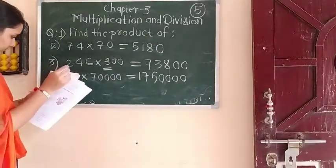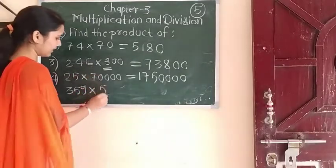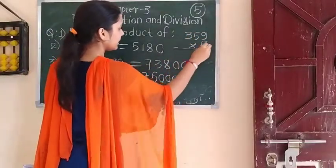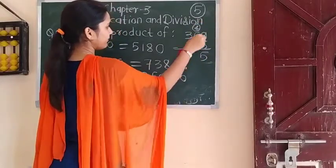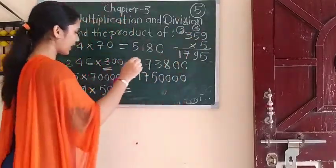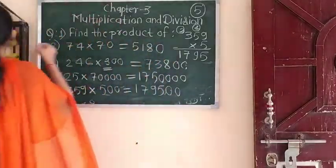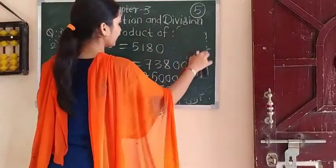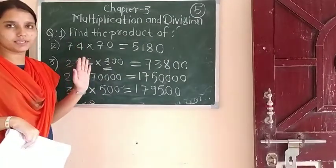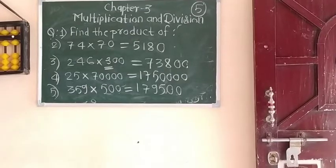Last example: 359 multiplied by 500. How will you solve this? First multiply 359 by 5: 5 nines are 45, 4 carry. 5 fives are 25 plus 4 is 29, 2 carry. 5 threes are 15 plus 2 is 17. So write down 1795. Count the number of zeros: 1, 2 — so add 2 zeros. The answer is 179,500. In this way you can find the product of such examples. This is the solution for all these types. Question number 1 is completed.